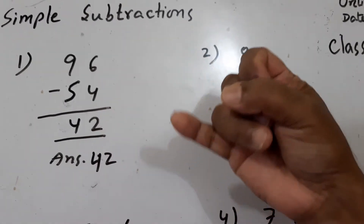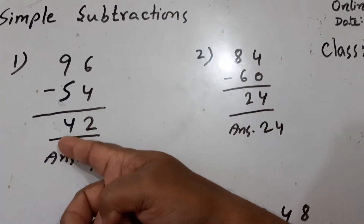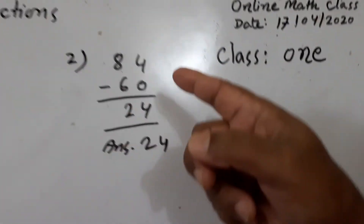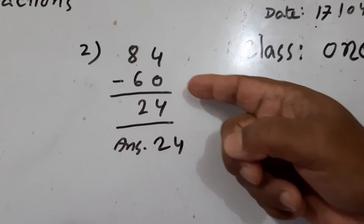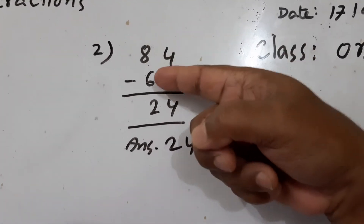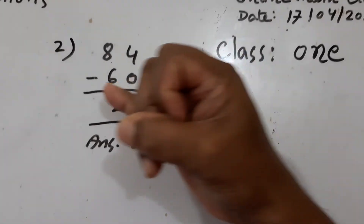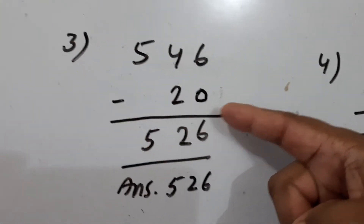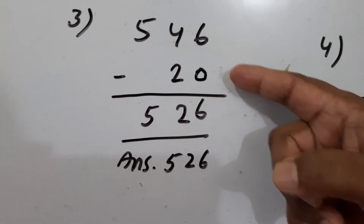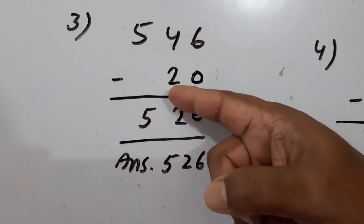After 5 up to 9: 5, 6, 7, 8, 9. That is 4. Right here, 4. Answer is 42. Now this is 84 minus 60. 4 minus 0 is 4. Now 8 minus 6, you have to read after 6 up to 8: 6, 7, 8. That is 2. Answer is 24.